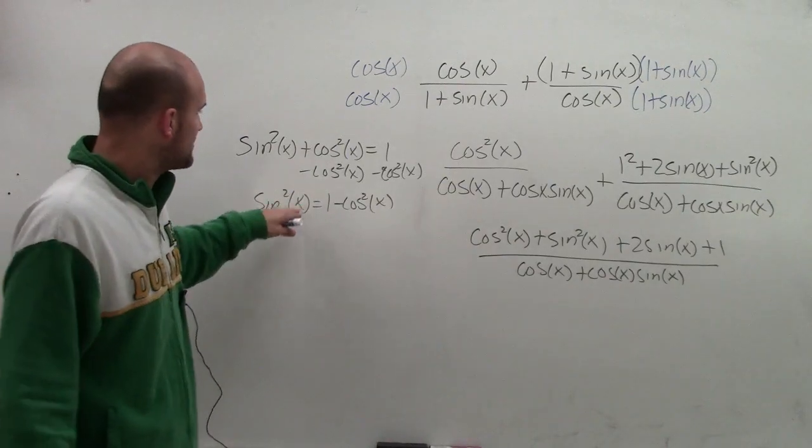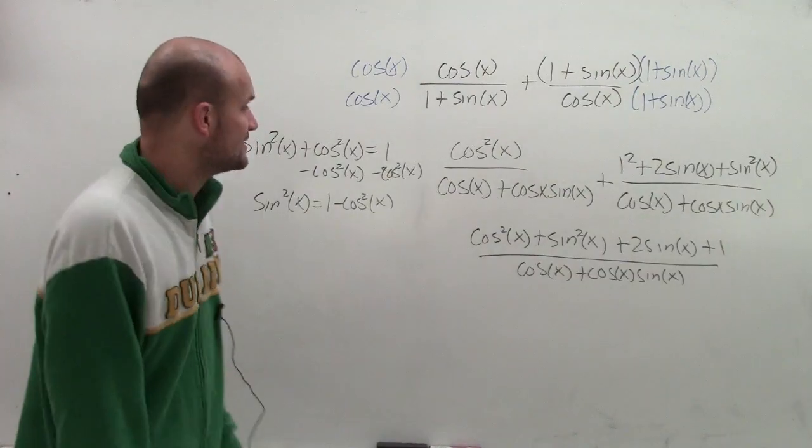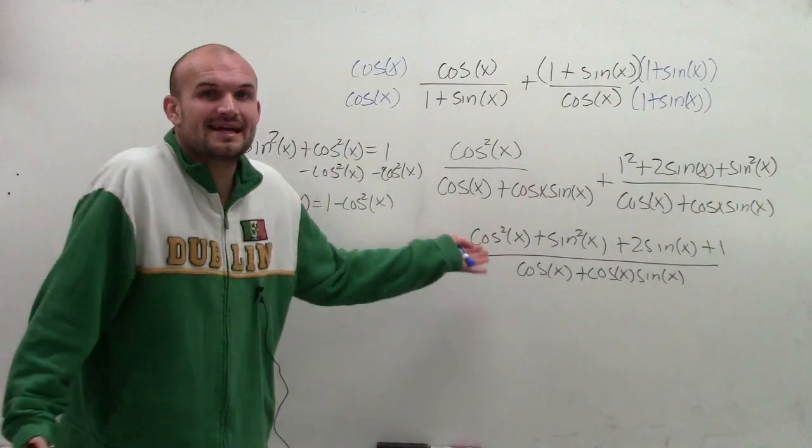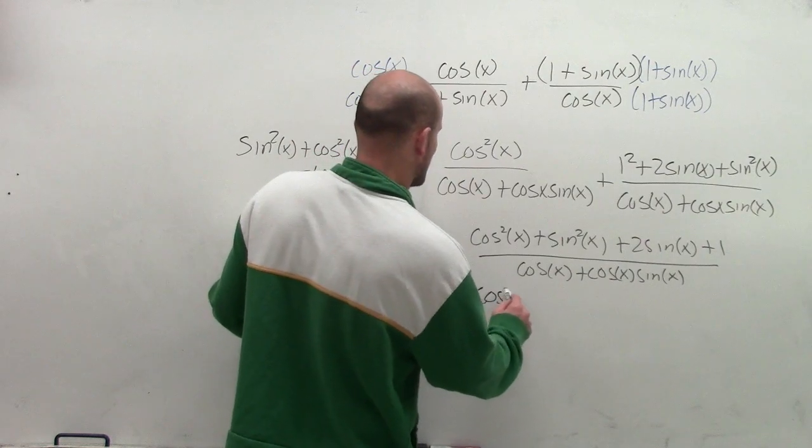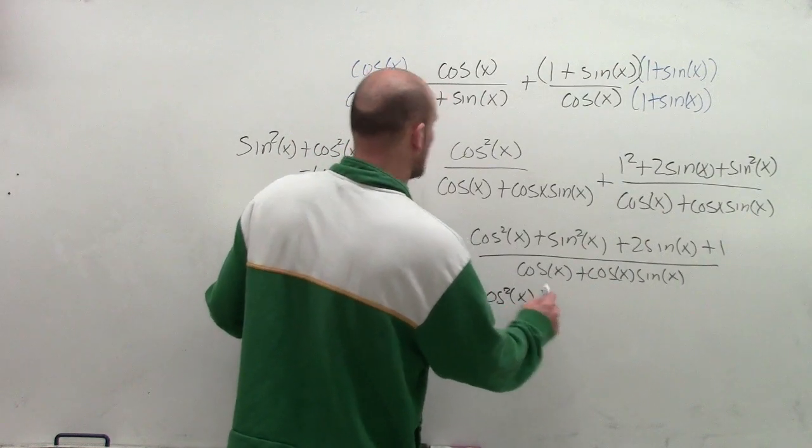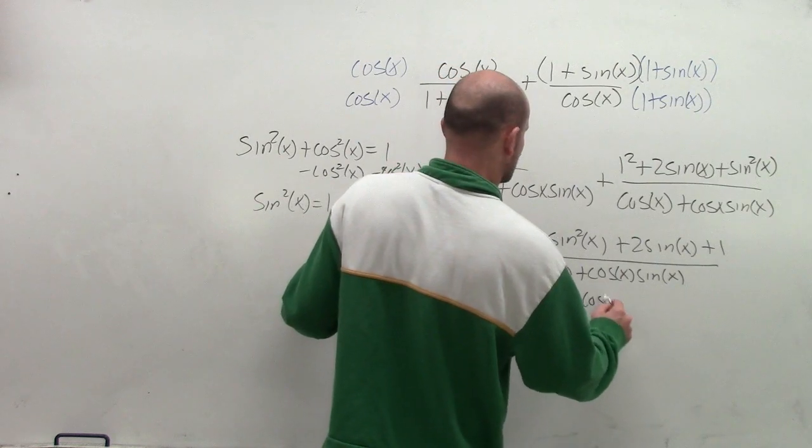So now what I'm going to do is plug in 1 minus cosine squared of x in for sine squared of x. And the reason why I want to do that is because I want to see is this going to cancel out or anything. So let's check it out. When I have cosine squared of x, now when I add in 1 minus cosine squared of x.